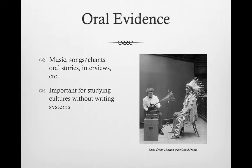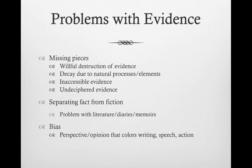So now that we've looked at the three major types of evidence — written, physical, and oral — let's look at some problems we run into with evidence, and how to overcome them. Sometimes you will run into problems in analyzing evidence. The biggest problem is missing pieces. We can have missing pieces for a number of reasons. Sometimes people purposefully destroy evidence for a variety of reasons — think shredding documents, burning stuff, etc. Mother Nature is a big destroyer of evidence too, because evidence can decay due to the elements.